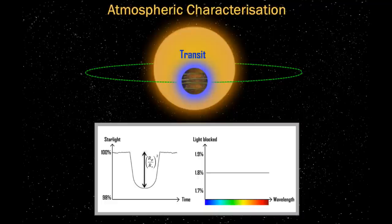The transit depth — this dip in the light — tells us the radius of the planet divided by the radius of the star, squared. And if we just had a boring lump of rock with no atmosphere, we would simply observe a flat line across different colours, because a rock doesn't care if you have blue light or red light — it blocks all of it equally across wavelength.